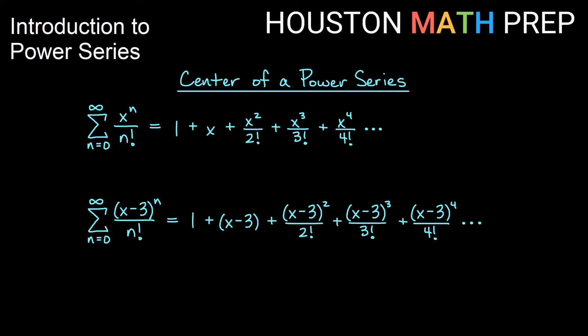If you look at how the variables are written in each of these power series, you should be able to tell that the top series here is centered at x equals 0, where the bottom series here is actually centered at x equals 3.